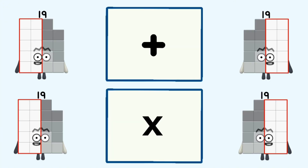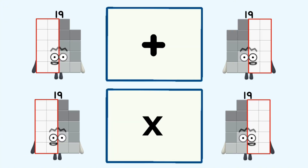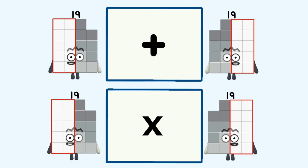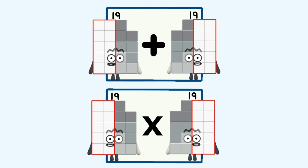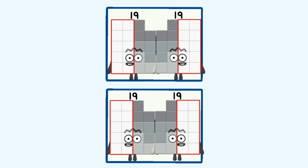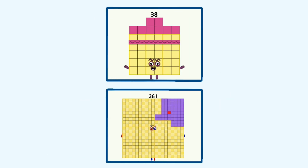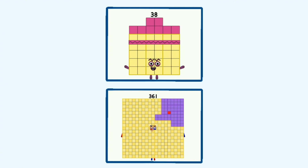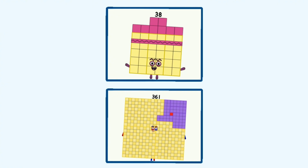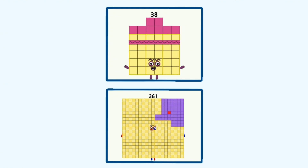19 plus 19 and 19 times 19 equals 38 and 361.